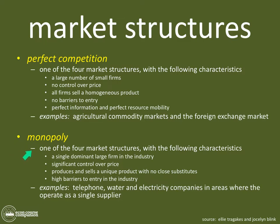Monopoly is one of the four market structures with the following characteristics: a single dominant large firm, significant control over price, producers sell a unique product with no close substitutes, and high barriers to entry. Examples include telephone, water, and electric companies operating as a single supplier. Growing up in Cleveland, Ohio, there was one energy company everybody bought electricity from — a monopoly the government had to regulate to control prices.